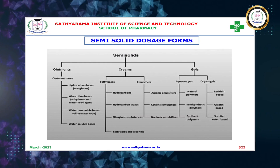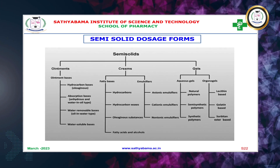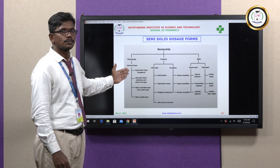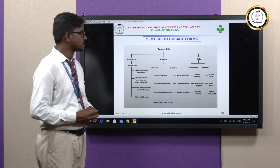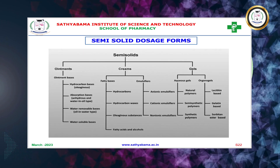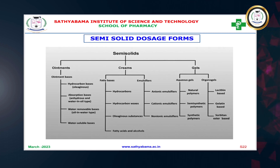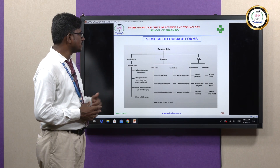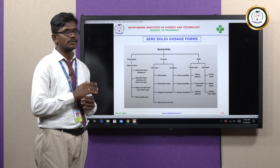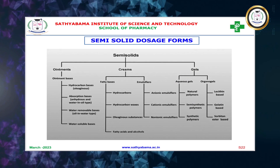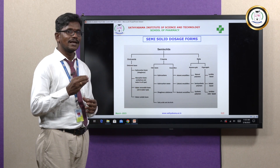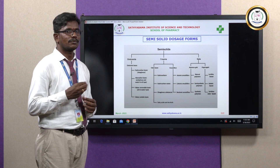Semi-solid dosage forms are classified mainly into three types: ointments, creams, and gels. Ointments are of four types: hydrocarbon bases, absorption bases, water removable bases, and water soluble bases. Creams are of two types: fatty bases and emulsifying bases. Emulsifying creams are anionic, cationic, and non-ionic types. Gels are of two types — aqueous gels and organogels. Gels contain natural polymers, semi-synthetic polymers, and synthetic polymers. Organogels include lecithin-based, gelatin-based, and sorbitan fatty acid ester types.